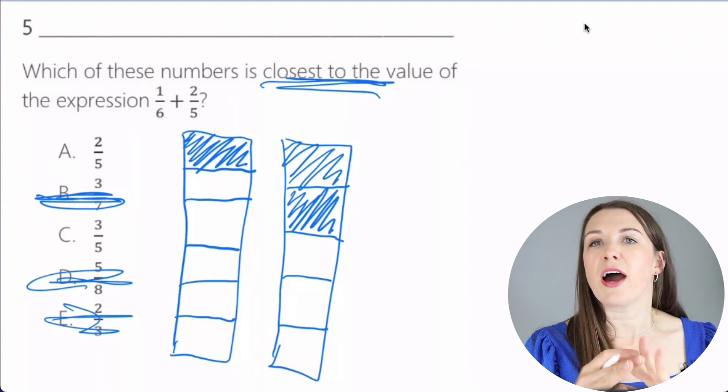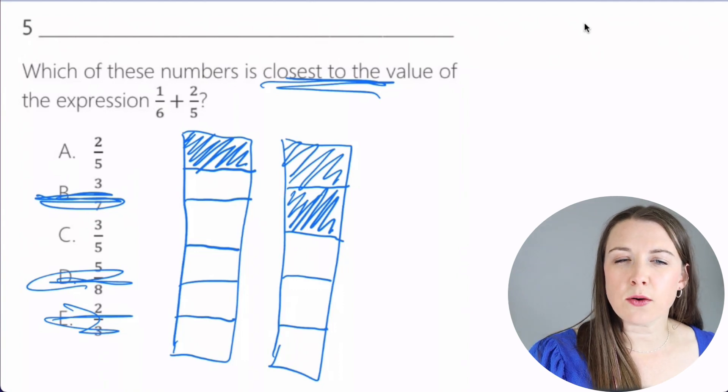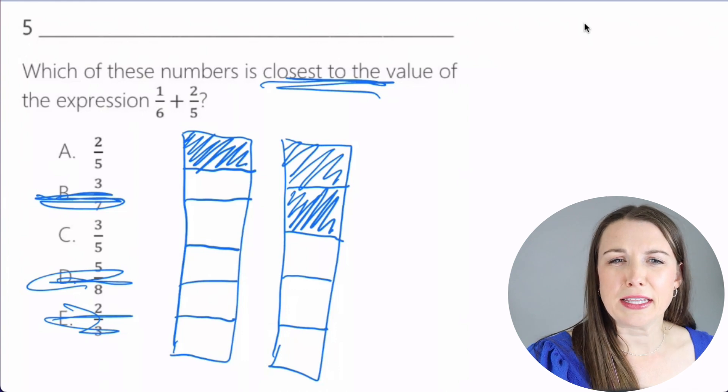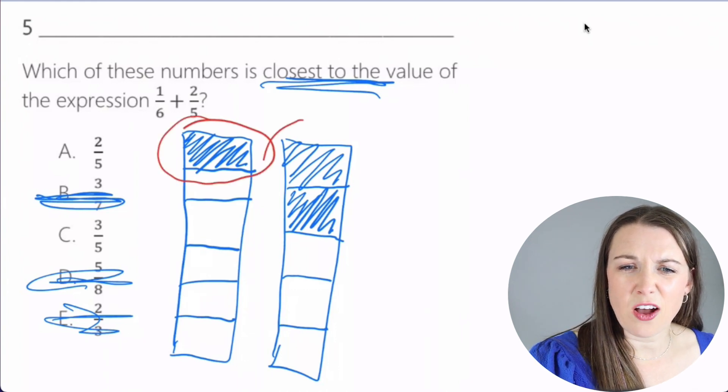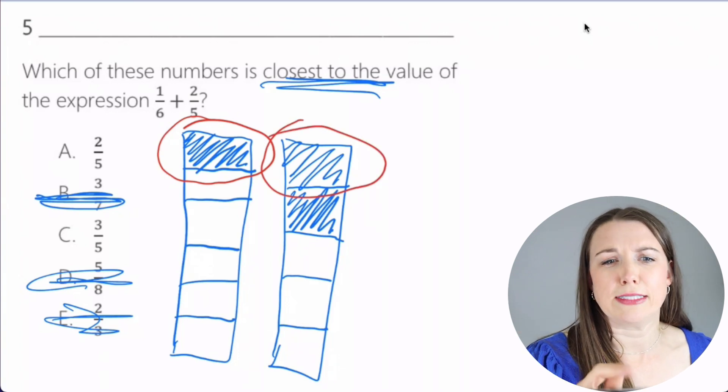Okay. So now how much am I giving you? Notice here that the 1/6, I mean, it's almost 1/5, right? Don't you think like this, this number, this right here, isn't it almost this right there? Yeah. We're just going to say it's 1/6. Okay. So we're going to say, or sorry, 1/5.